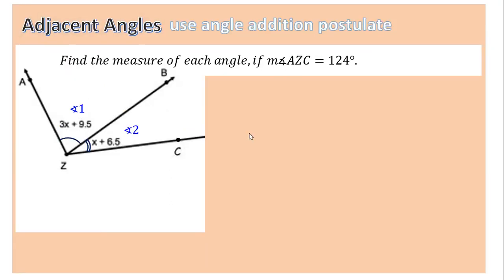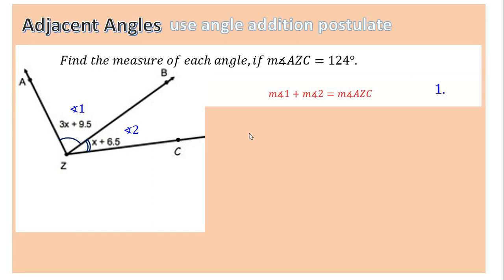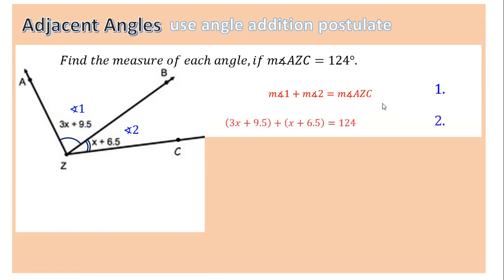Next, let's look at adjacent angles. Adjacent angles add up to equal the total. In this case, we have two unknown angles, but we know they add up to 124. The relationship is angle 1 plus angle 2 equals the whole angle AZC. Then substitute: angle 1 is 3x plus 9.5, angle 2 is x plus 6.5, and all of that equals 124.